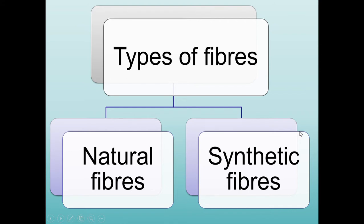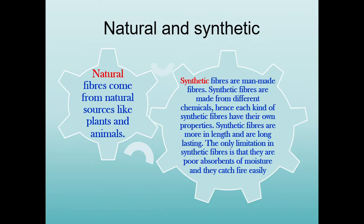There are two types of fibers: natural fibers and synthetic fibers. Natural fibers come from natural sources like plants and animals. Synthetic fibers are man-made from different chemicals, so each kind has its own properties. Synthetic fibers are longer and more long-lasting, but their limitation is poor moisture absorbance and they catch fire easily.